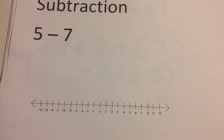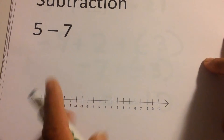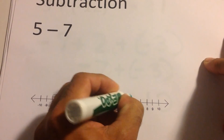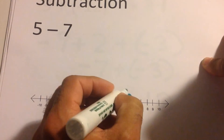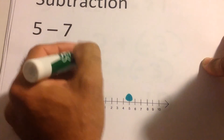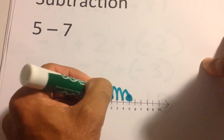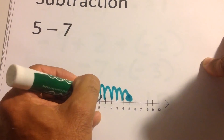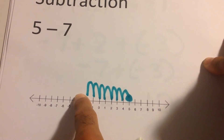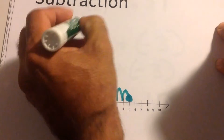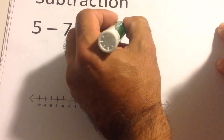Now let's look at subtraction. Take five minus seven. Start at five on the number line. Minus means go to the left — one, two, three, four, five, six, seven — and you land on negative two.